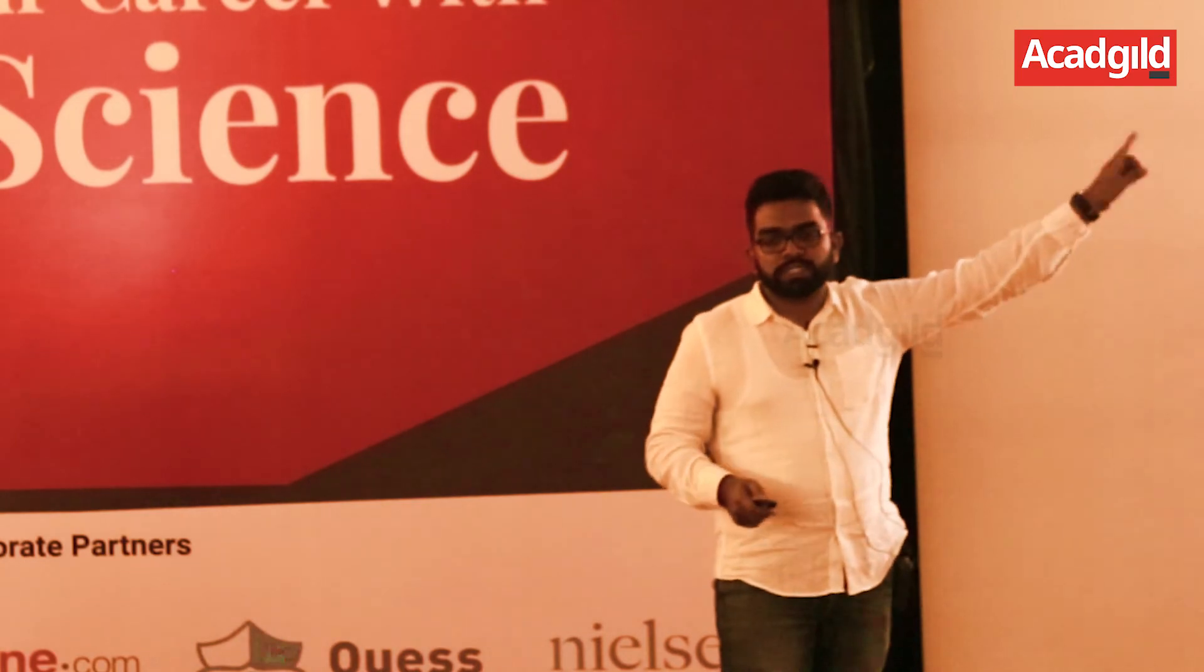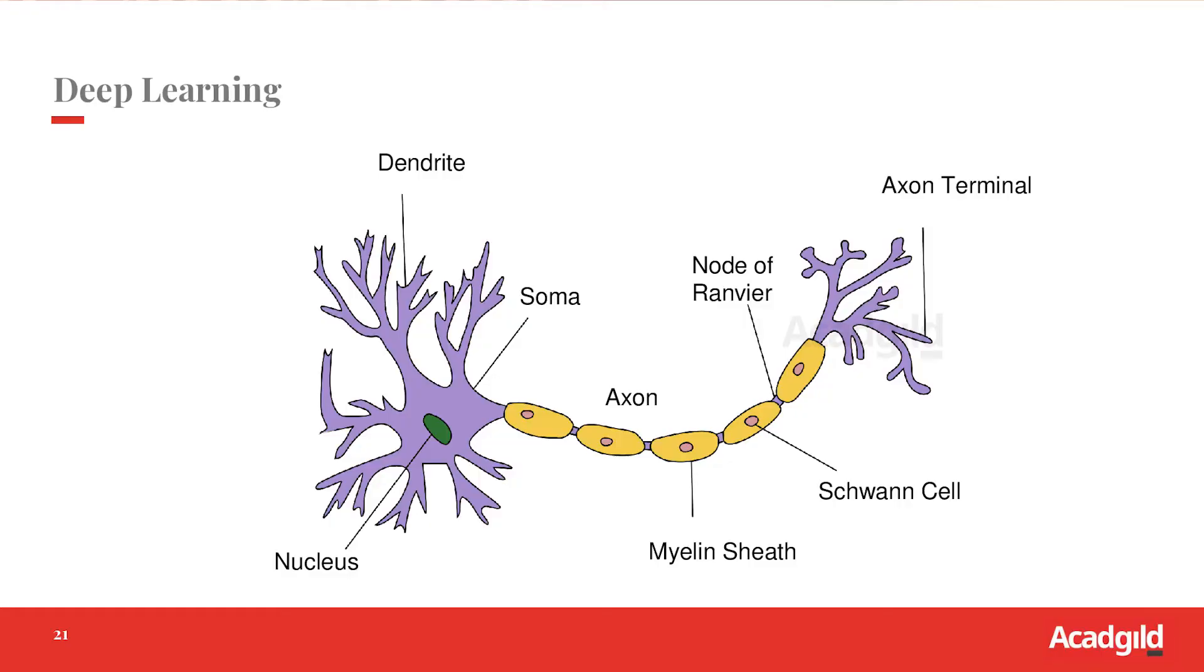It's just one form of machine learning algorithm, like a decision tree. Neural networks is another algorithm. What does a neural network look like? These circles are called neurons, and these are the connections between neurons. Neurons is a concept borrowed from human neurons.